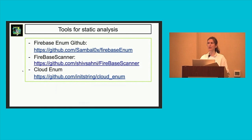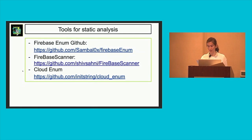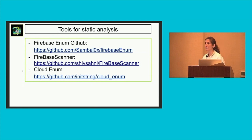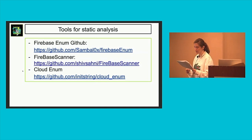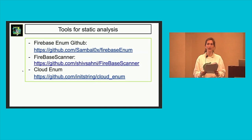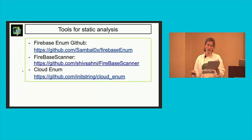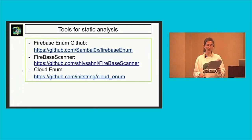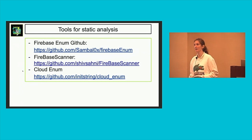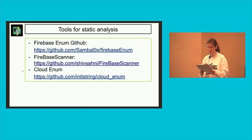These are some tools for static analysis. Firebase Enum is available on GitHub. Firebase Scanner was just mentioned. And Cloud Enum is useful to enumerate databases or public resources in the cloud. Sometimes you can find AWS secret keys and try to use them to access resources on AWS — definitely worth mentioning in a report, similar to what we saw with Firebase instances.